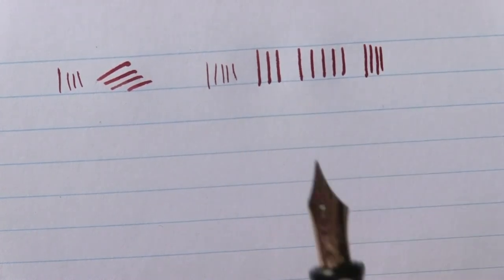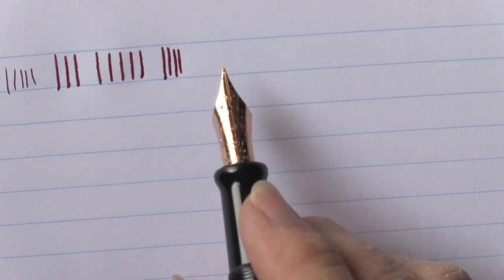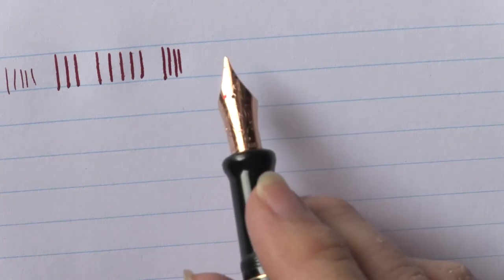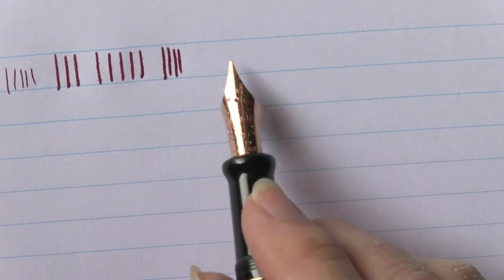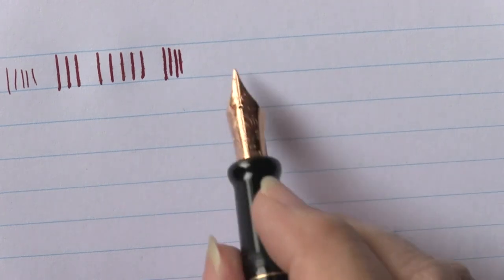The beauty of this nib is that you can rotate it on the axis, and as long as we are positioned in the center, the nib writes like this, but as soon as we tilt it, the stroke increases.